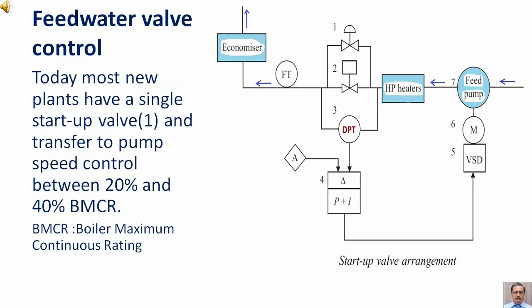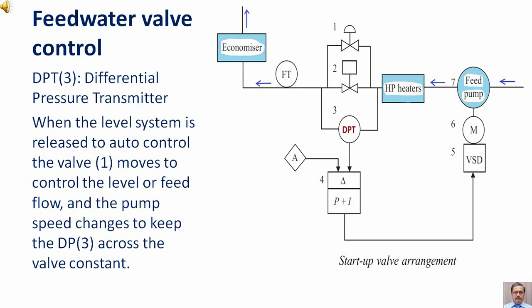Most new plants have a single startup valve first item and transfer to pump speed control between 20% and 40% BMCR. BMCR stands for boiler maximum continuous rating. DPT differential pressure transmitter.